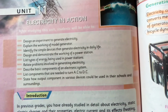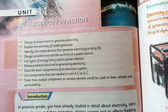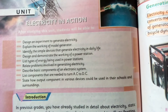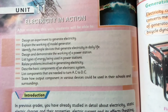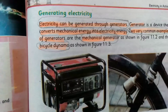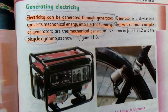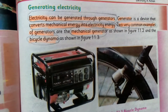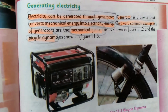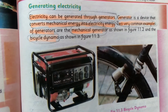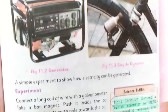Bismillah. Assalamu Alaikum wa Rahmatullahi wa Barakatuh. In General Science class 8, today we are covering Unit 11: Electricity. An important point is that electricity can be generated through a generator. A generator is a device that converts mechanical energy into electrical energy. Two very common examples of generators are the mechanical generator and the bicycle dynamo.